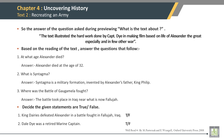The answer to the previewing question — what is the text about? The text illustrates the hard work done by Captain Dye in making a film based on the life of Alexander the Great. Based on reading the text: Alexander died at the age of 32. Syntagma is a military formation invented by Alexander's father, King Philip. The battle of Gaugamela took place in Iraq, near what is now Fallujah. True or false: King Darius defeated Alexander in a battle fought in Fallujah, Iraq — this is false. Dale Dye was a retired marine captain — this is true. This is the end of Chapter 4, Text 2. Thank you.